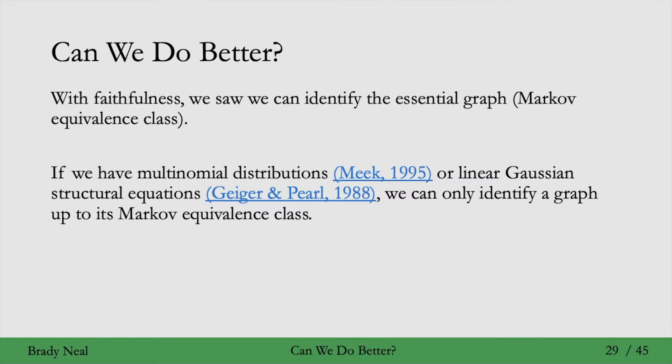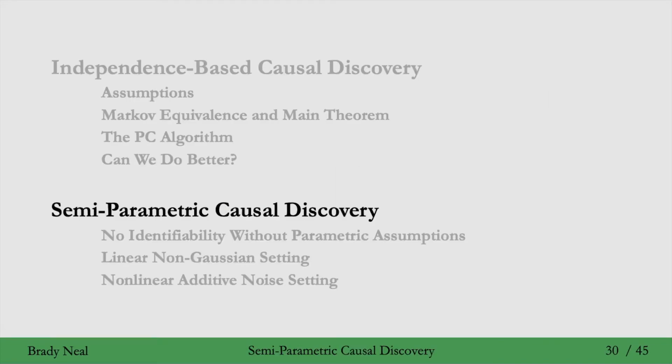Okay, but this seems a bit specific. Why are we talking about linear Gaussian structural equations? What if we care about non-Gaussian structural equations, where the noise is non-Gaussian? Or non-linear structural equations? And the spoiler is that we can get identifiability of the exact graph in those cases. So that's what we'll see in this semi-parametric causal discovery section.